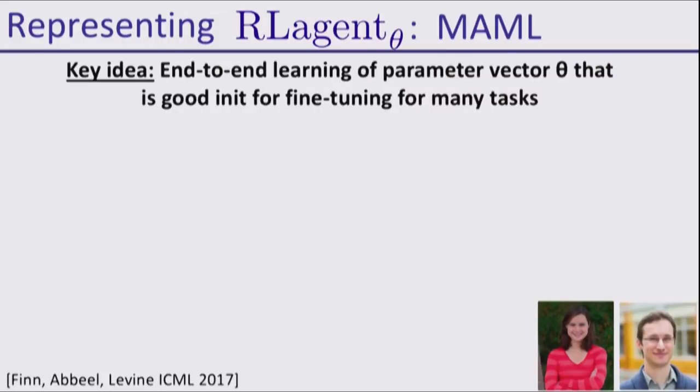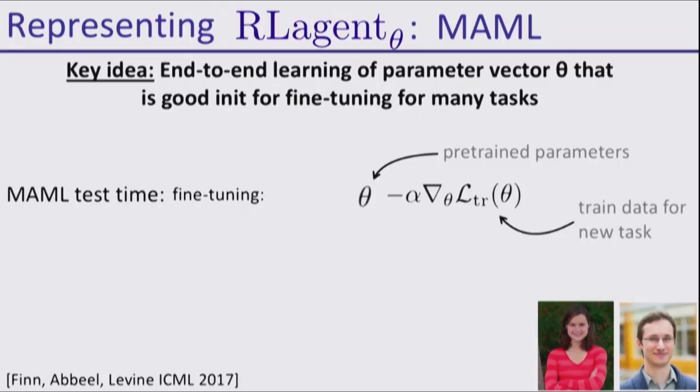Or you can do yet something else. You might say, well, we know gradient descent is pretty effective. Let's stick with gradient descent and see if we can pre-train an agent such that it's ready for fine-tuning when faced with a new environment. This is called MAML. At test time, you're going to be fine-tuning. You start with some pre-trained parameters, get some new data, compute a gradient, do an update, get a fine-tuned parameter vector, and hopefully this is good at solving the task.